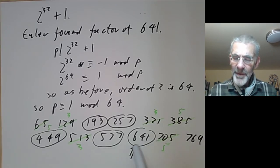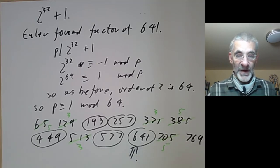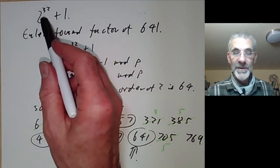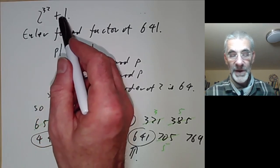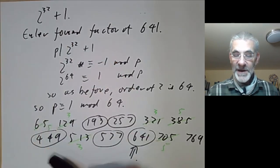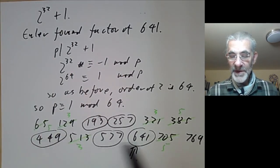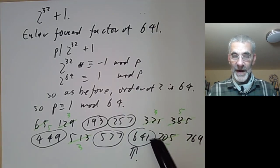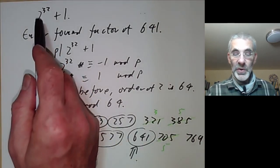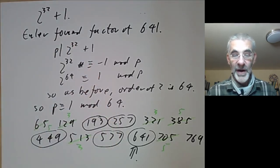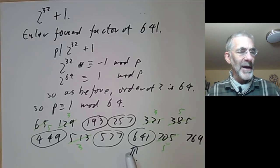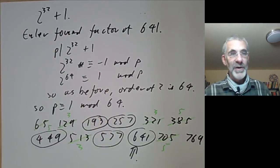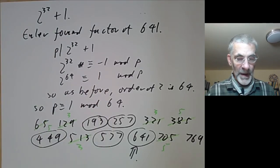There's actually a minor historical puzzle: why didn't Fermat himself find this factor? Fermat was happy doing large numerical calculations — he worked out 2 to the 64 plus 1 explicitly, and testing a few candidates would have taken him only minutes. He certainly knew a similar argument. The most likely guess is that Fermat did check 641 but made a numerical error, though we don't know for sure.